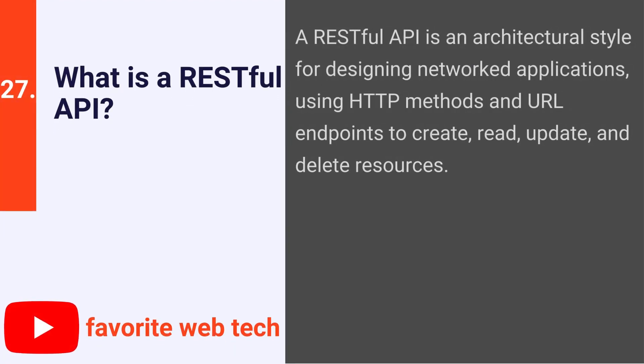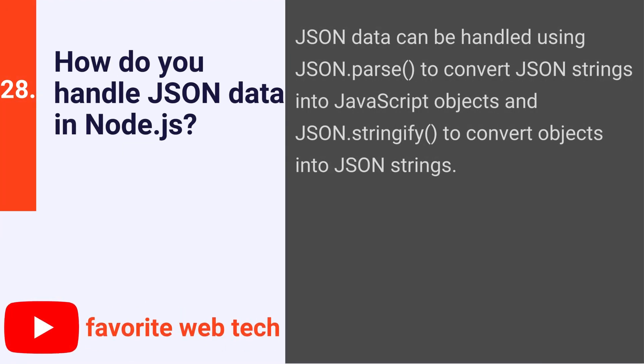What is a RESTful API? A RESTful API is an architectural style for designing networked applications, using HTTP methods and URL endpoints to create, read, update, and delete resources. How do you handle JSON data in Node.js? JSON data can be handled using JSON.parse to convert JSON strings into JavaScript objects, and JSON.stringify to convert objects into JSON strings.